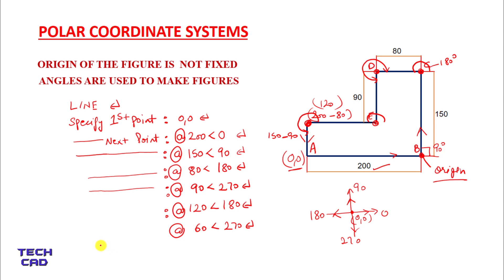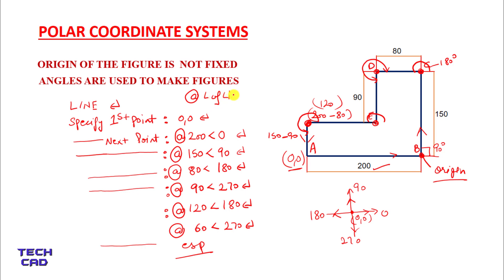It will again ask you to specify the next point. Now you come back to your origin, so you have to press Escape here. In this way you can make your figures with the help of polar coordinate systems. In polar coordinate systems, your syntax is: at-sign (@), then length of the line, then less-than sign, and the angle.